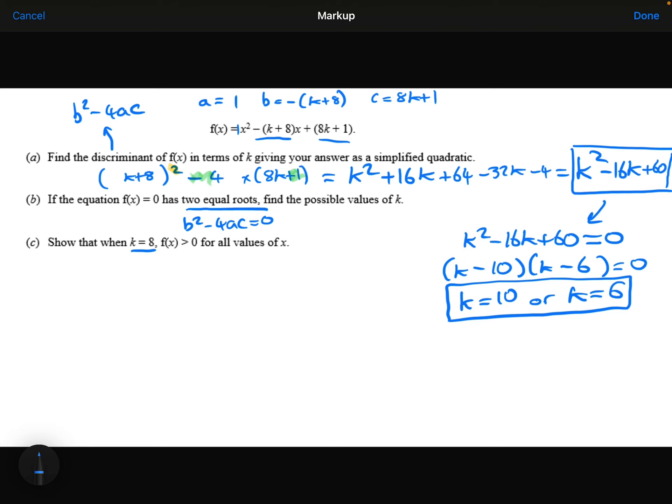So k is 8. If I substitute that into my original equation now, to work out exactly what f(x) is, we've got x squared at the front, minus...